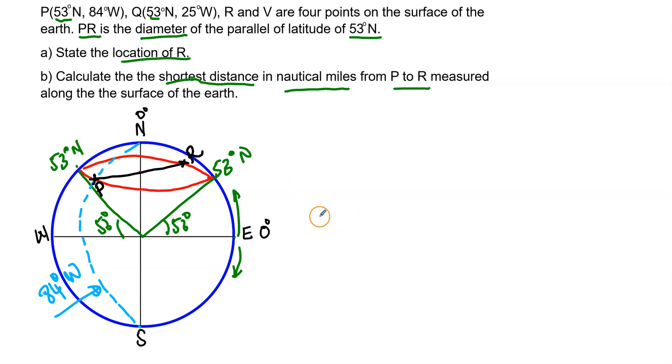So what would be the position of R then? Well, if we're going to have a diameter, that means we have a semicircle. Which is what? That means from point P to R is 180 degrees. So let's see what we have. If we draw a line and we have our prime meridian, which is zero degrees. This is west and this is east.